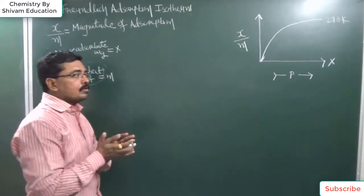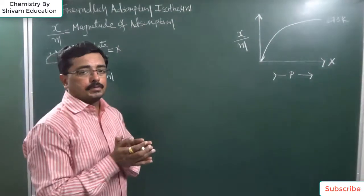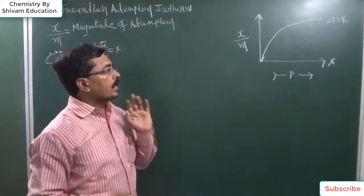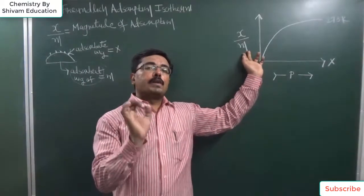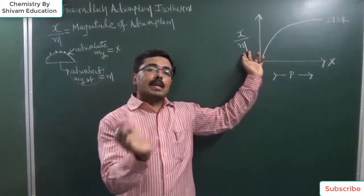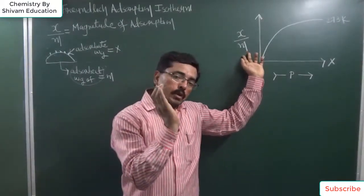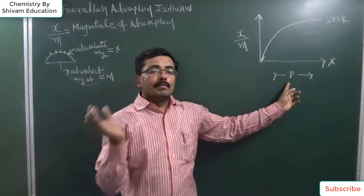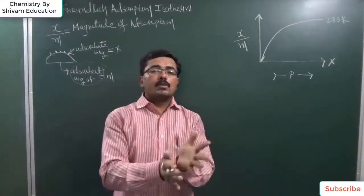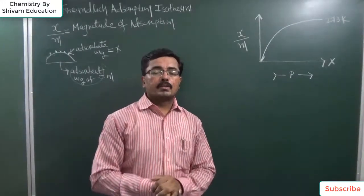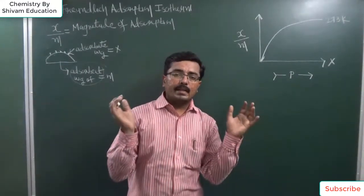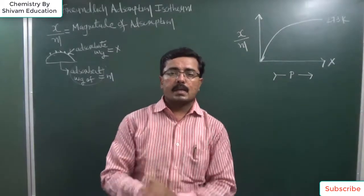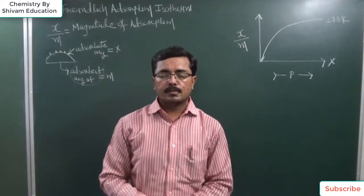When, at a constant temperature, we draw the graph of magnitude of adsorption versus pressure, we get a different type of curve, and such a curve is known as an adsorption isotherm.